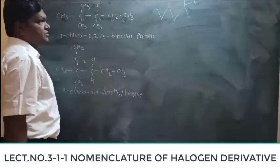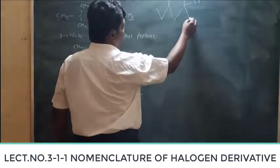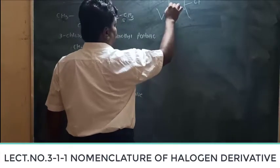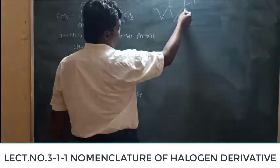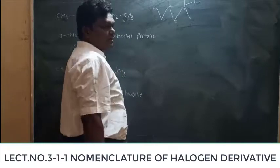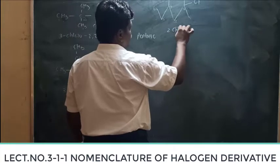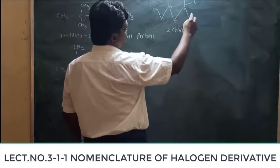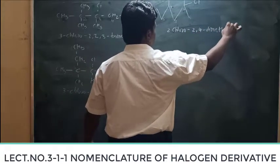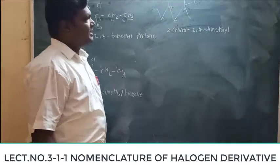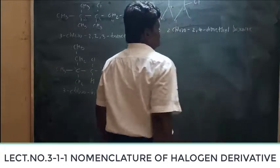The next compound is in bond-line structure. Select the longest chain of carbon atoms — you find one, two, three, four, five, six, making it hexane. The second carbon atom contains chlorine and a methyl group, and the fourth carbon atom also contains a methyl group. So the IUPAC name is 2-chloro-2,4-dimethylhexane. This is a straightforward compound.